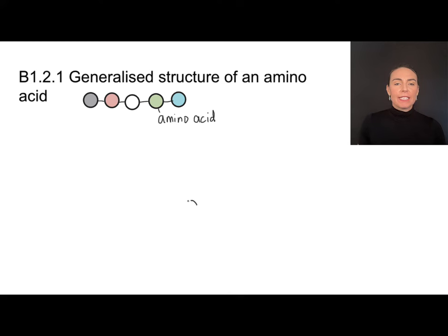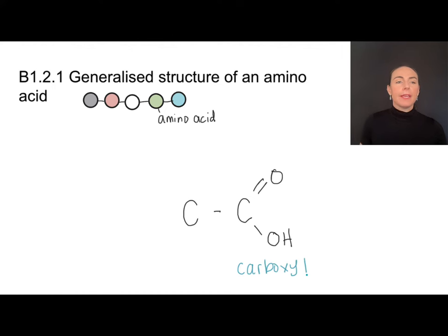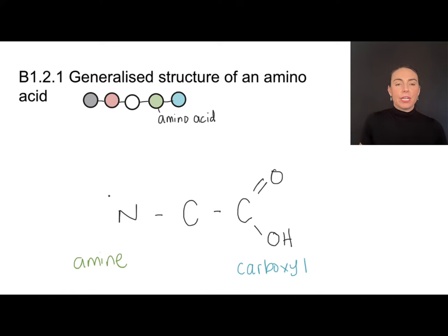These are all going to involve a central carbon atom, so I usually draw that first, attached to a carboxyl group. A carboxyl group is a double-bonded oxygen and then a hydroxyl group — I can label that here as a carboxyl group. On the other end, I have what is called an amine group, which is a nitrogen and two hydrogens. So this is my amine end.